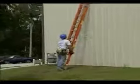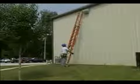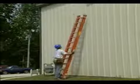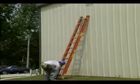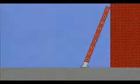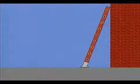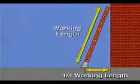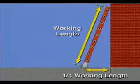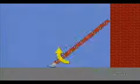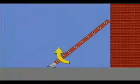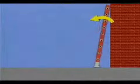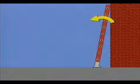One of the most important rules when using a straight or extension ladder is to maintain the correct ladder angle. When a ladder is placed against a wall or other support structure, the distance between the wall and the base of the ladder should be one-fourth the working length of the ladder. The working length is the distance between the base of the ladder and the point where the top contacts the wall, measured along the rails. If the base is placed too far from the wall, the ladder could slip out from under you. If the base is too close to the wall, the ladder could tip over backwards.